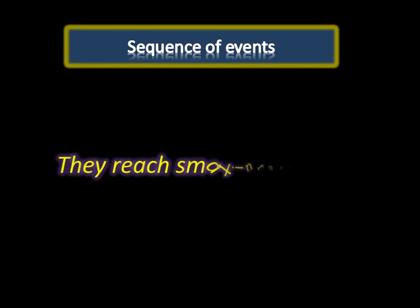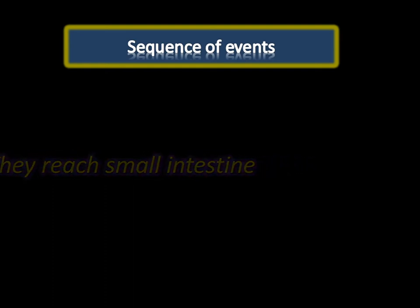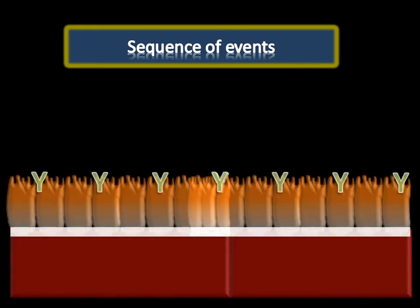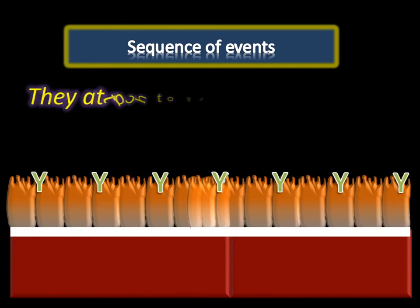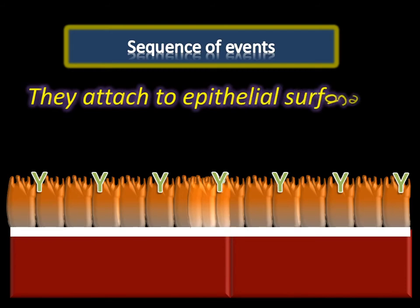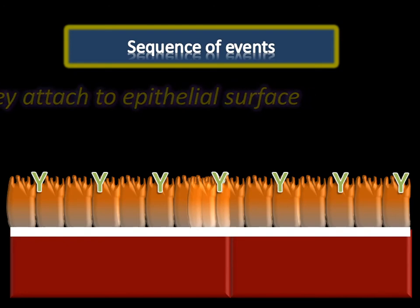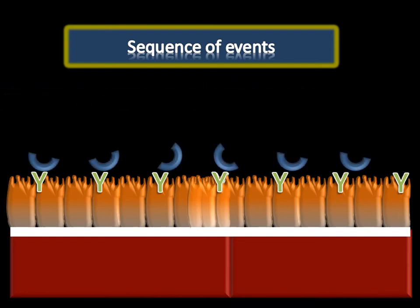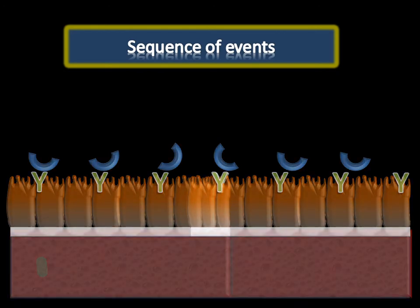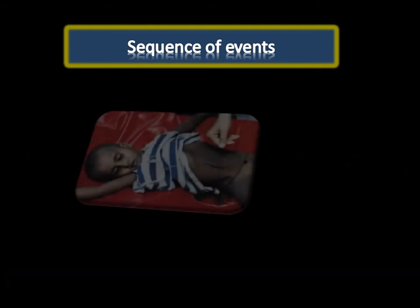The bacilli attach to the epithelial cell surface. Vibrios do not invade the epithelial cells, unlike diphtheria. They secrete toxin, which enters the cell as discussed previously. As shown in the given figure, this is how Vibrio enters the intestine and causes profuse watery diarrhea, leading to dehydration, shock, acidosis, and death.